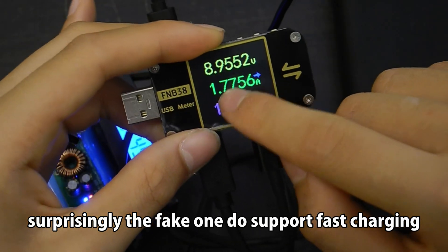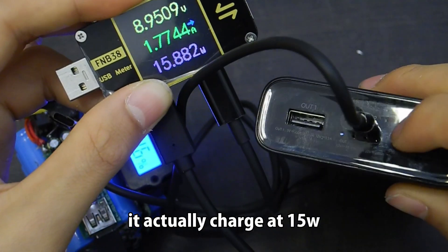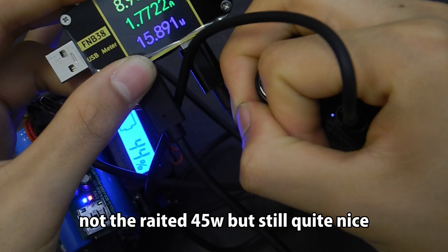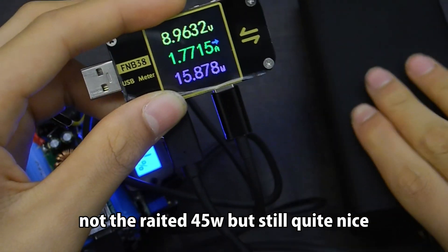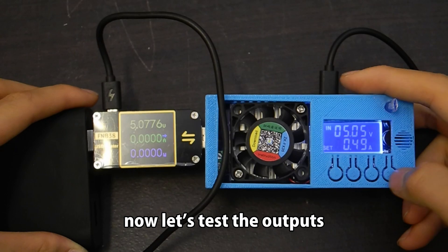Surprisingly the fake one does support fast charging. It actually charges at 15W. So it's probably an 18W quick charge board. Not the rated 45W but still quite nice. Now let's test the outputs.